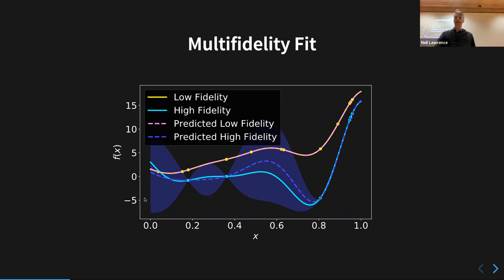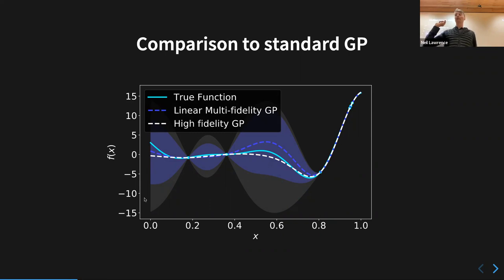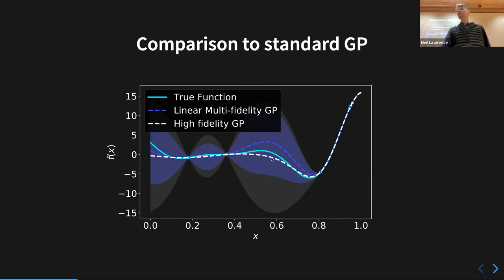That looks nice. Here's the comparison to the standard GP: if we weren't to use the low fidelity, just looking at the points we sampled with the high fidelity, this is what the standard GP would do. The linear multifidelity GP is shown in blue, and the standard high fidelity GP — looking at those points only — doesn't capture the fact that this region is likely to be going up. It sort of goes down there and just misses that feature.